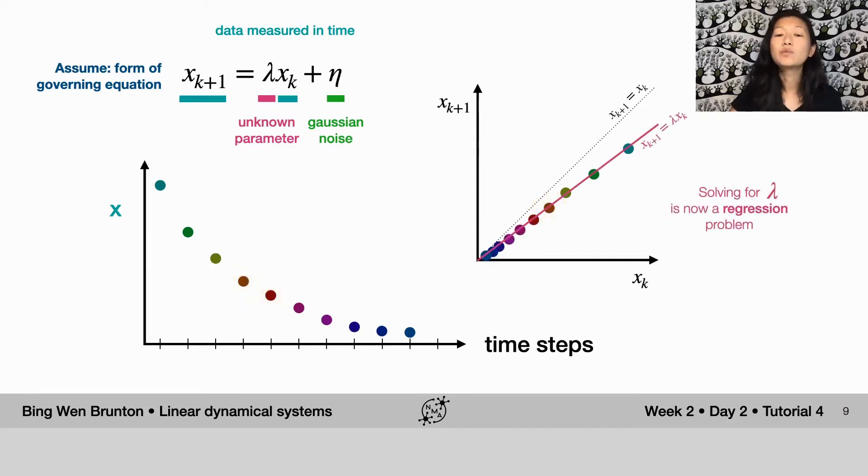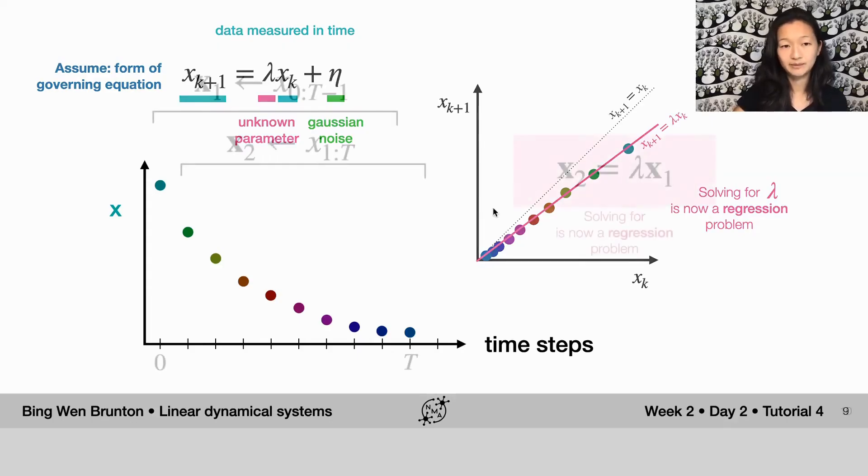Because we know the way you get from x sub k to x sub k plus 1 is by this constant multiplying by lambda, we can actually solve for lambda from the data as a regression problem by fitting a linear line through all of our data points plotted in these coordinates and then solving for the slope. I'm going to go into how to do this in a practical way by setting it up as a regression problem.